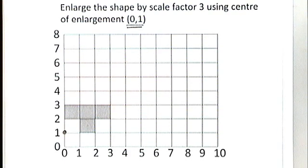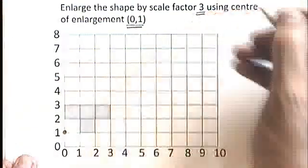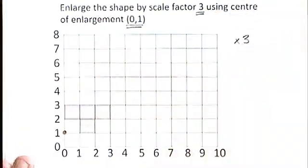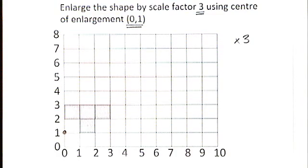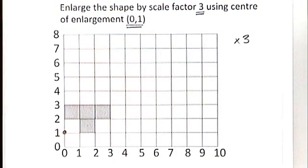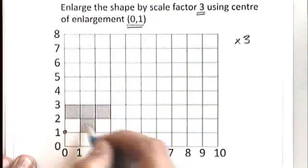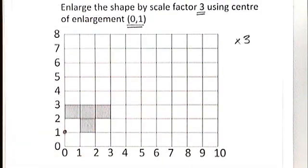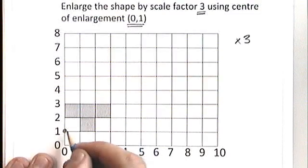That is my center of enlargement. That is the point from which all of my distances are going to be, in this case, trebled, times by 3. So what I'm going to do is, I'm just going to look for a couple of places on this T shape, where I might be able to triple the distance quite easily from this point.